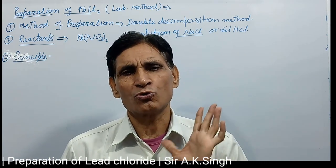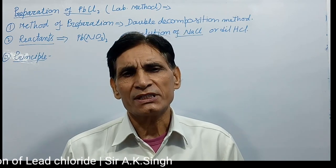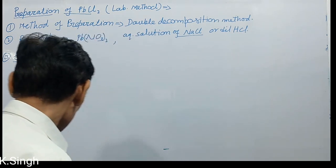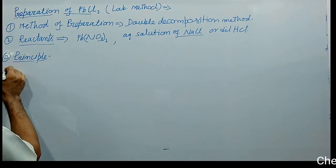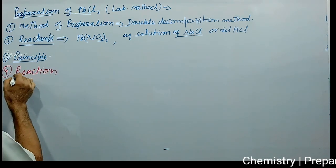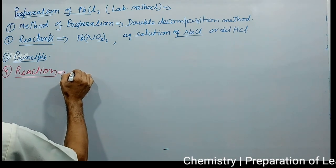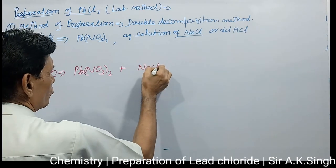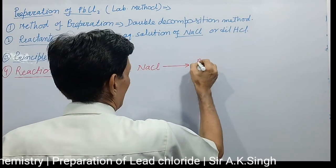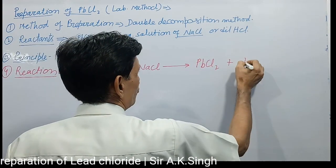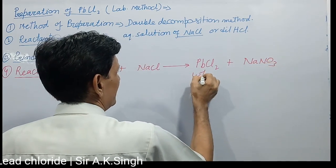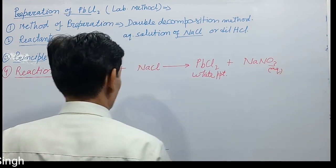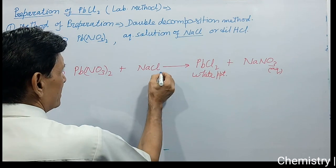There is also formation of an aqueous solution of sodium nitrate. Hydrochloric acid can also be used in place of sodium chloride. The reaction taking place is: lead nitrate solution reacts with sodium chloride solution to form lead chloride and sodium nitrate. Lead chloride is a white precipitate.